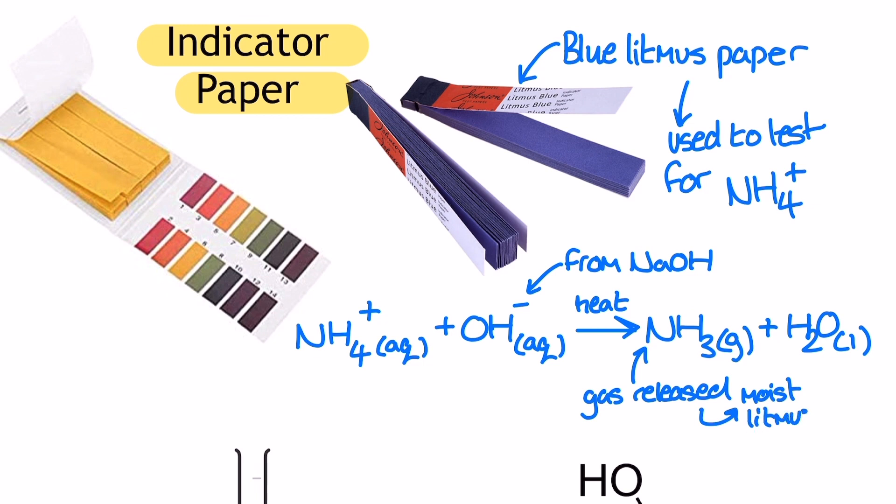If the blue litmus paper remains blue, then that suggests an alkaline gas is being released. In this case, our gas is ammonia, and this confirms the presence of ammonium ions in the solution.